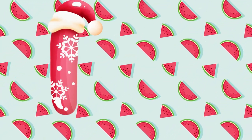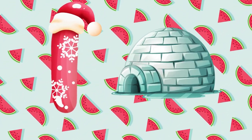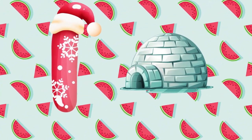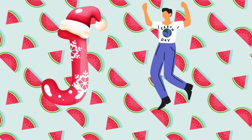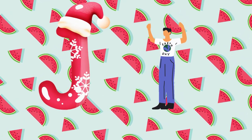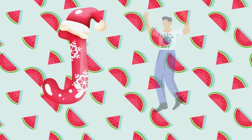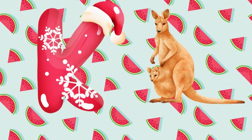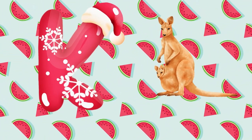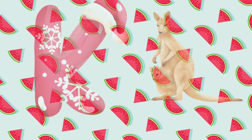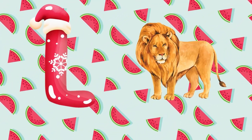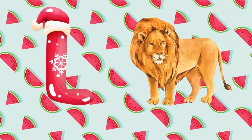I is for igloo, i-i-igloo. J is for jump, j-j-jump. K is for kangaroo, k-k-kangaroo. L is for lion, l-l-lion.